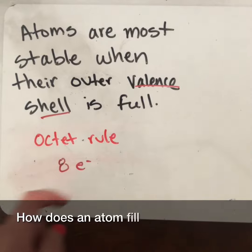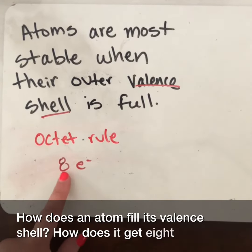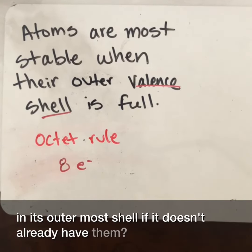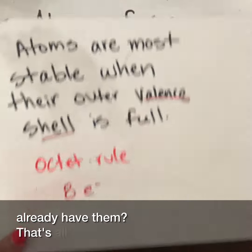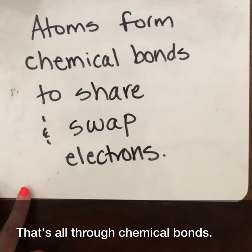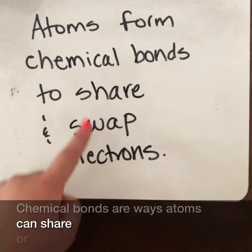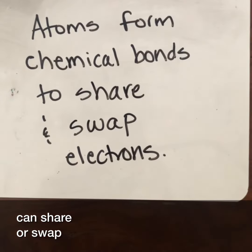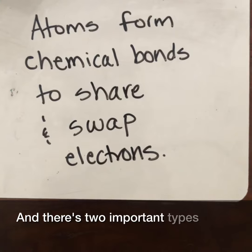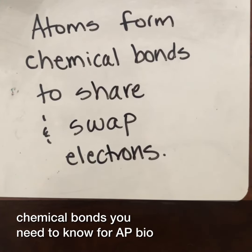How does an atom fill its valence shell? How does it get eight electrons in its outermost shell if it doesn't already have them? Well, that's all through chemical bonds. Chemical bonds are ways atoms can share or swap electrons. There are two important types of chemical bonds you need to know for AP Bio.